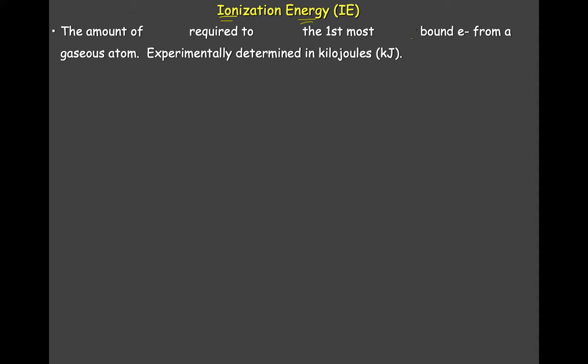They push energy into it until the electrons pop off, so you end up getting a plasma — electrons coming off the atoms — and you produce positive ions. The minute these electrons come off, it produces a notification for the scientists, and then they write down the number of joules or kilojoules needed to knock off these electrons. So really it's the amount of energy required to remove the first most loosely bound electron from a gaseous atom.